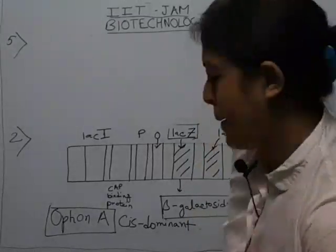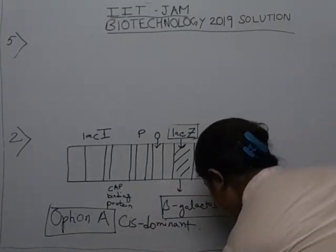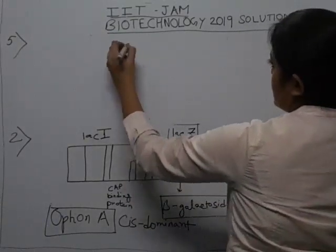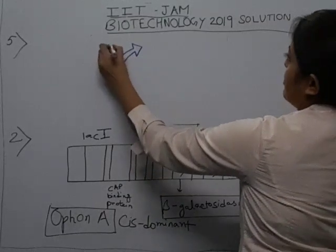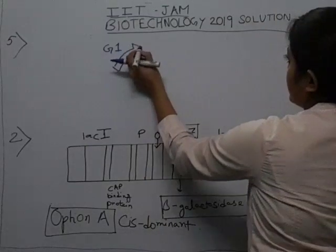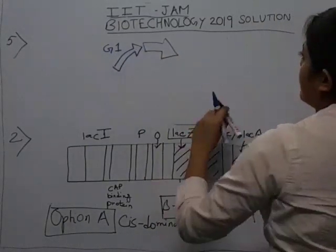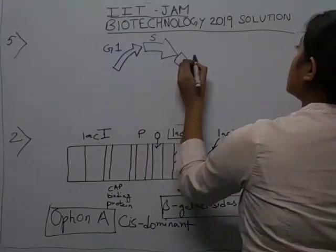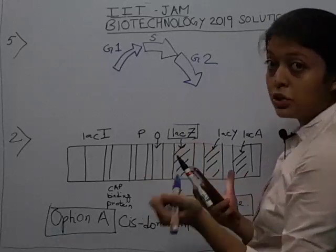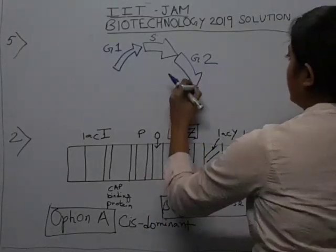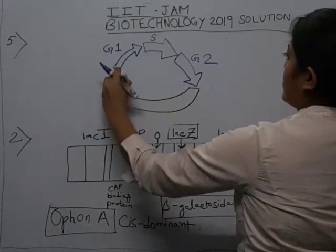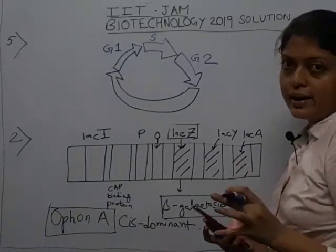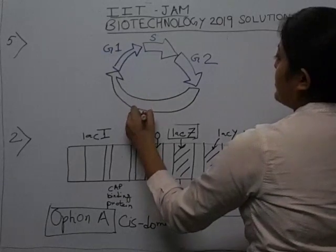I'm using two colours to make it more precise since cycles are being shown. Here we have G1 — Gap period 1. Then we have S, the synthetic phase. Then G2 phase. And then we have our M phase. M can be mitosis or meiosis, whichever kind of cell division we are talking about — M is going to be that. So this is the entire cell cycle: G1, S, G2, and M.